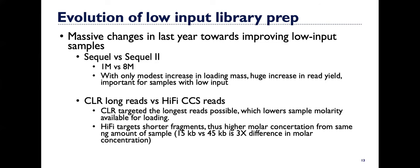Additionally, we're transitioning from CLR long reads to hi-fi circular consensus reads. CLR reads targeted the longest read possible. So when you're doing that, you're getting these really nice big long reads, but what it's doing also is lowering the sample molarity available for loading from the same amount of input DNA. Hi-fi targets these shorter fragments, thus higher molar concentration from the same nanogram amounts of input sample. So for example, a 15 kb library versus a 45 kb library will be a three times higher molar concentration. That allows you to then start with lower amounts of material again and still achieve high yields off the system.